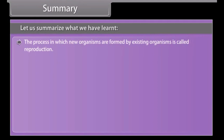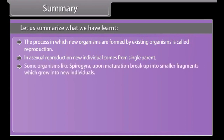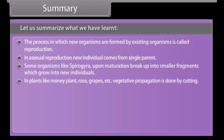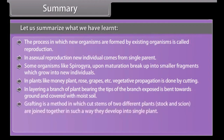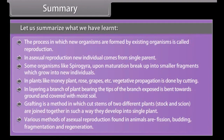Summary. The process in which new organisms are formed by existing organisms is called reproduction. In asexual reproduction, a new individual comes from a single parent. Some organisms like Spirogyra, upon maturation, break up into smaller fragments which grow into new individuals. In plants like money plant, rose, and grapes, vegetative propagation is done by cutting. In layering, a branch of a plant is bent to the ground and covered with moist soil. Grafting is a method in which cut stems of two different plants — the stock and scion — are joined together so they develop into a single plant. Various methods of asexual reproduction found in animals are fission, budding, fragmentation, and regeneration.